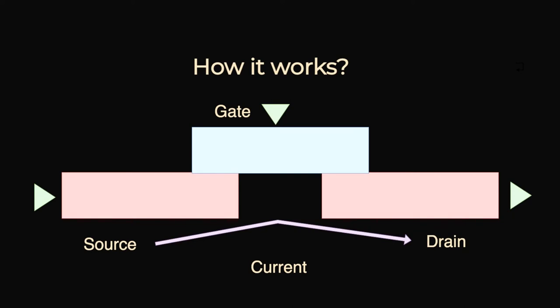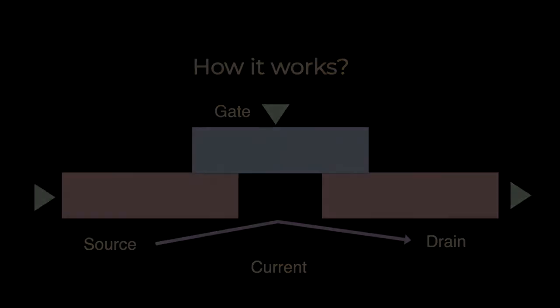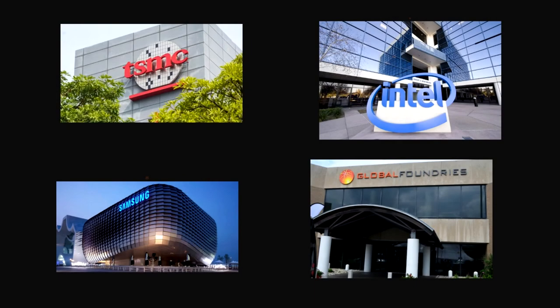Today, computer processors or CPUs, how often we name them, are manufactured by many different companies. Some of them are Global Foundries, TSMC, Samsung and Intel.